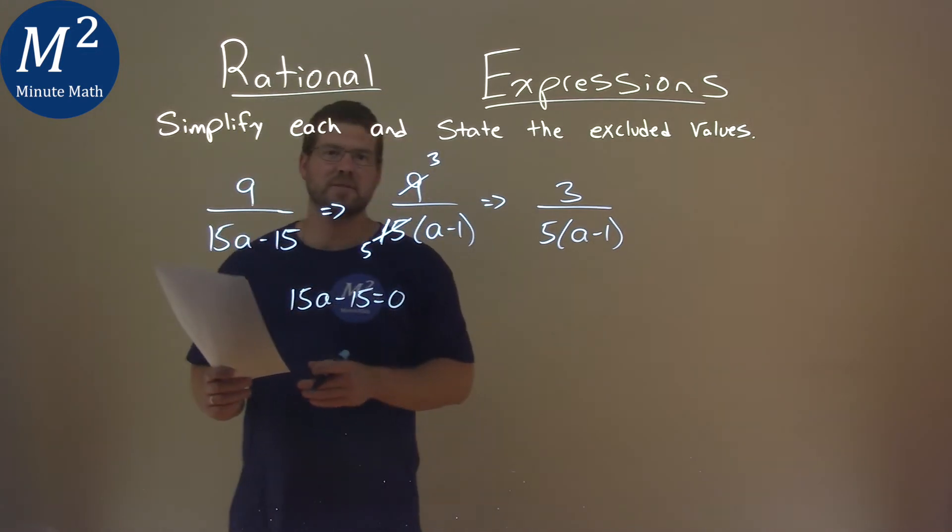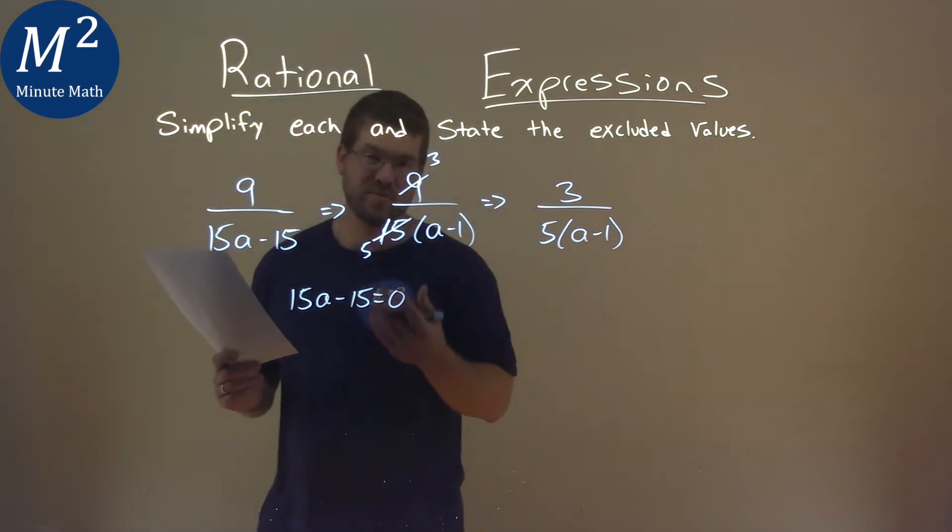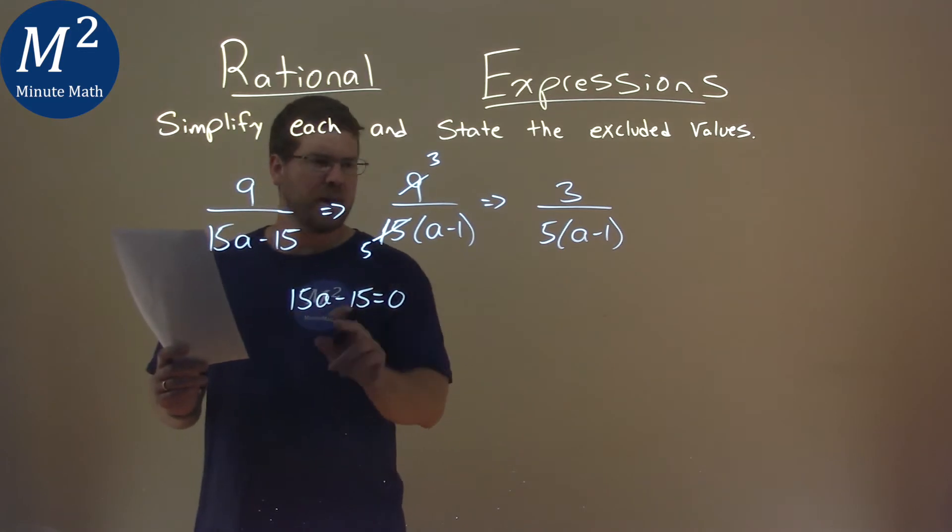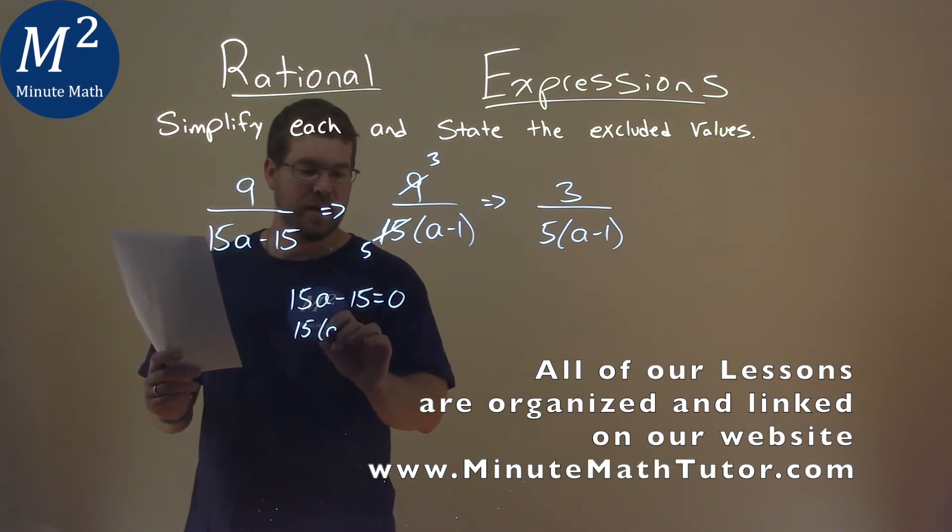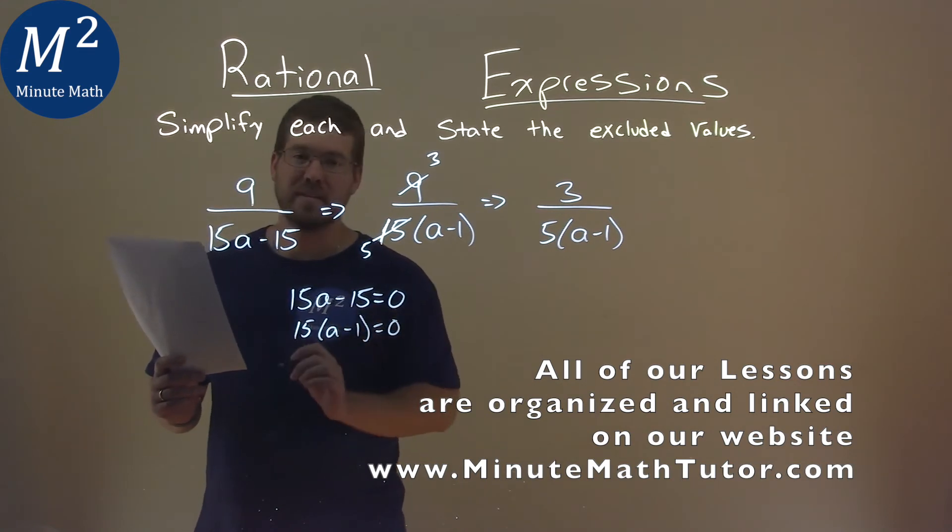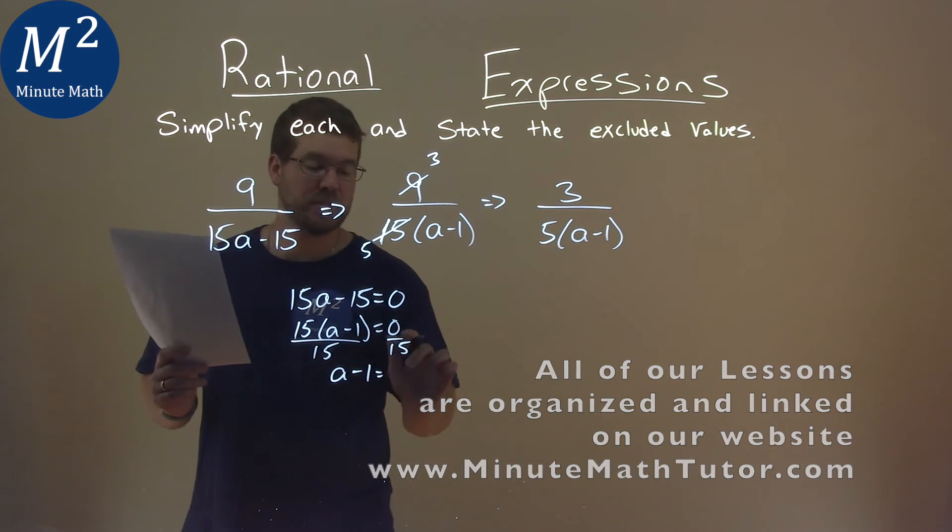And now we're going to solve for a here. Again, we saw that simplified here. We pull out a 15, 15 times the a minus 1 equals 0. That's easier. Divide both sides by 15, and well, a minus 1 is equal to 0 divided by 15, which is 0.